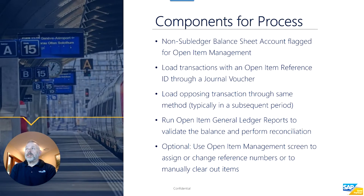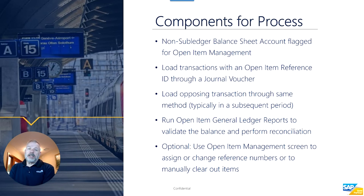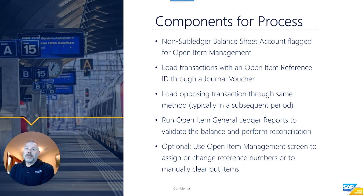The components to make this process work are: first, a non-subledger balance sheet account must be flagged for open item management. Second, you load transactions with an open item reference ID through a journal voucher. Third, you load an opposing transaction using the same method, typically in a subsequent period, though it could happen in the same period. Then you run the open item general ledger report to validate the remaining open items and perform your reconciliation. There is also an optional screen where you can assign or change reference numbers or clear things manually when reference items didn't match or weren't loaded.